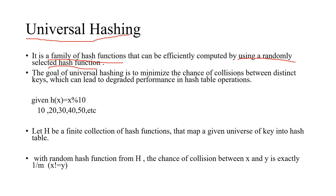So far we have explained many collision resolution techniques: linear probing, separate chaining, quadratic probing, and double hashing. All these collision resolution techniques use a fixed hash function. Linear, separate chaining, and quadratic each use a single hash function for every element, calculating the index and storing in the hash table. Because of that single hash function, they get more collisions. Linear probing has a primary clustering problem, and quadratic probing has a secondary clustering problem.